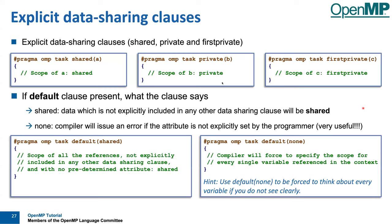If you have a default clause, it determines the default sharing of all variables. With default(shared), anything you do not explicitly mention in private or firstprivate will be shared. If you put default(none) — which is the recommendation, even though it's a bit verbose for every task construct — the compiler forces you to specify the scope of every variable you use in the context of the construct. It forces you to think about proper data sharing and enumerate all variables as shared, private, or firstprivate, which avoids nasty surprises when refactoring your code.